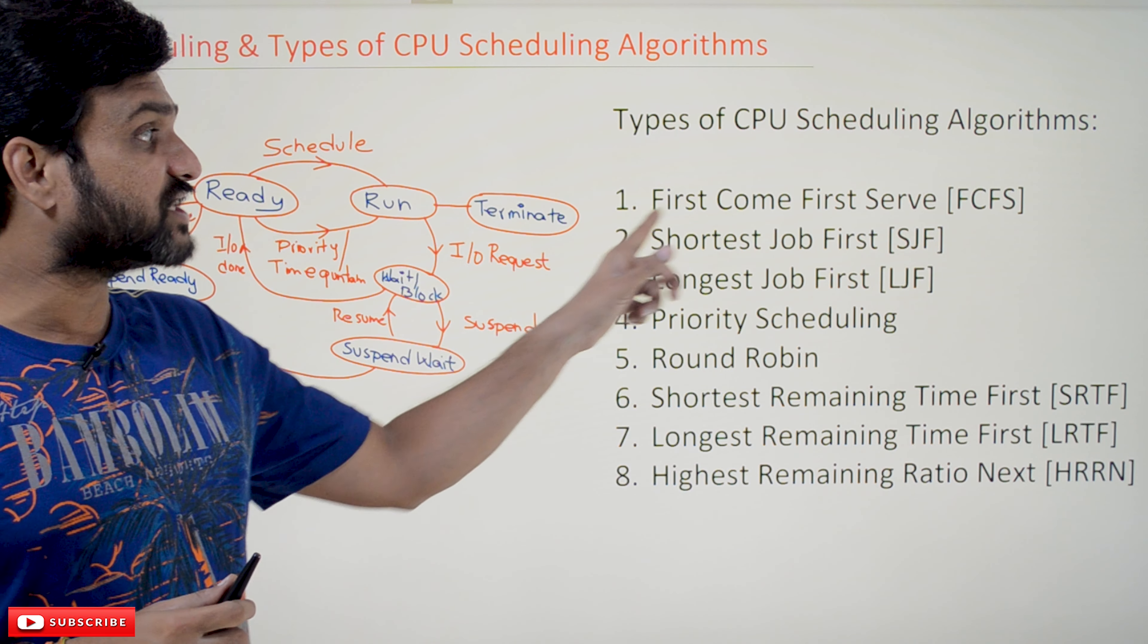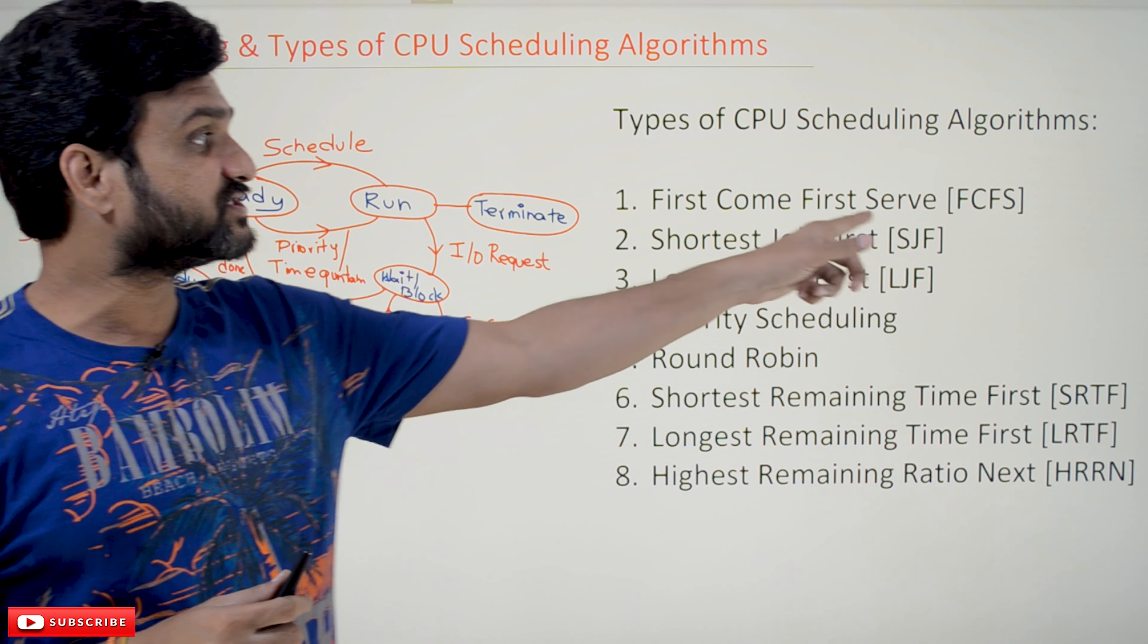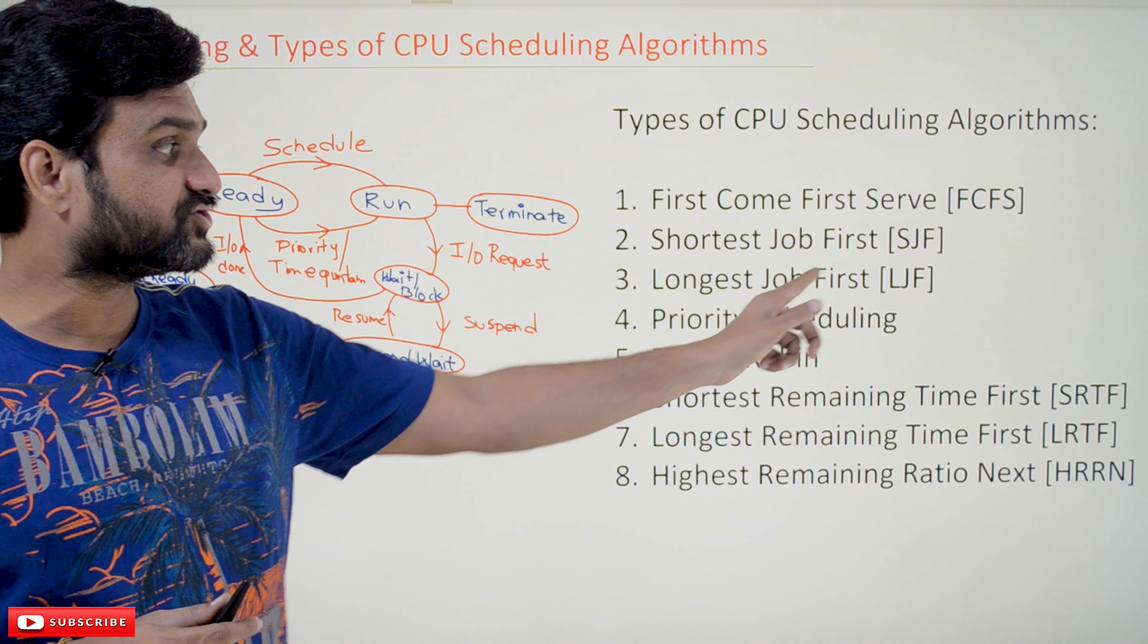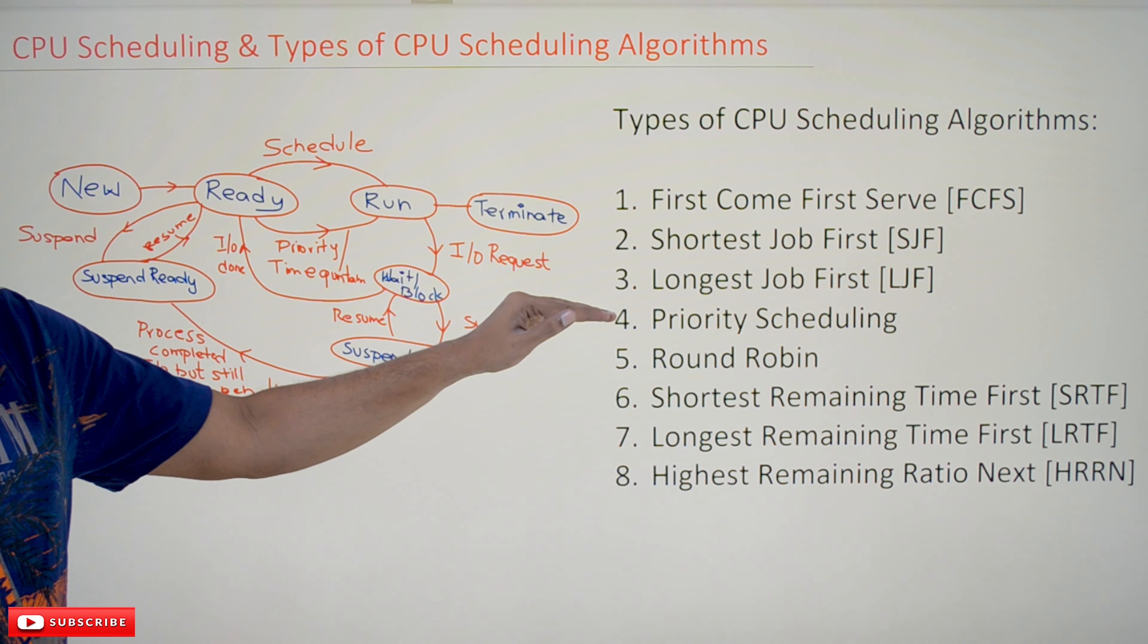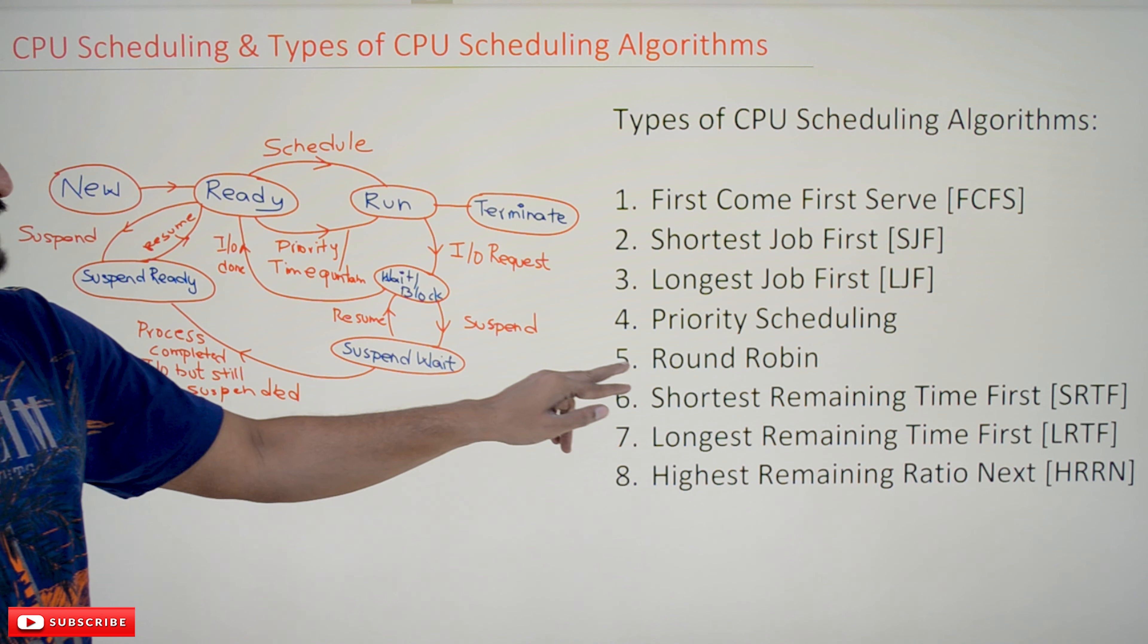They are: First Come First Serve (FCFS), Shortest Job First (SJF), Longest Job First (LJF), Priority Scheduling, and Round Robin scheduling.